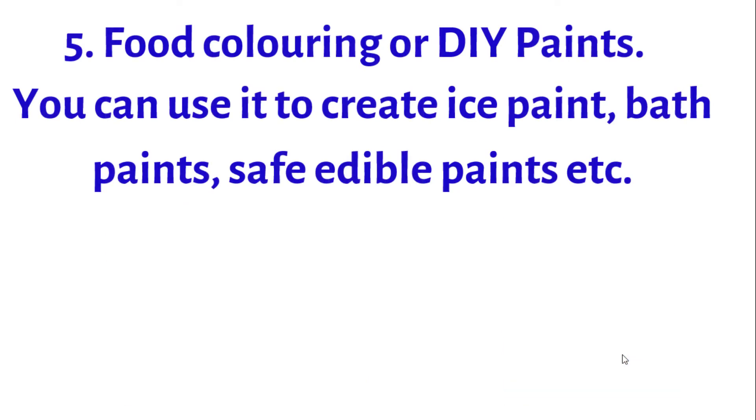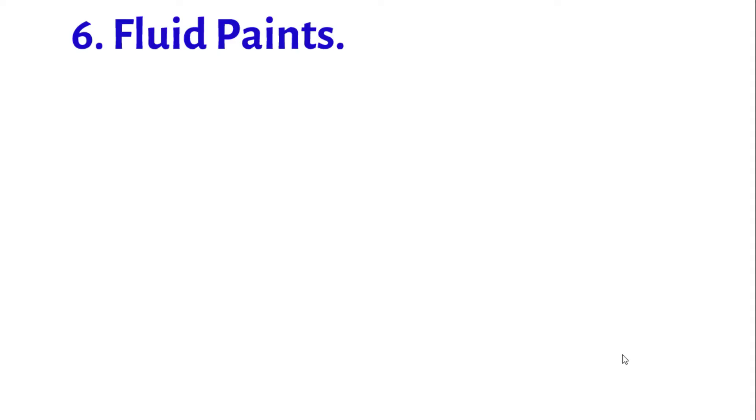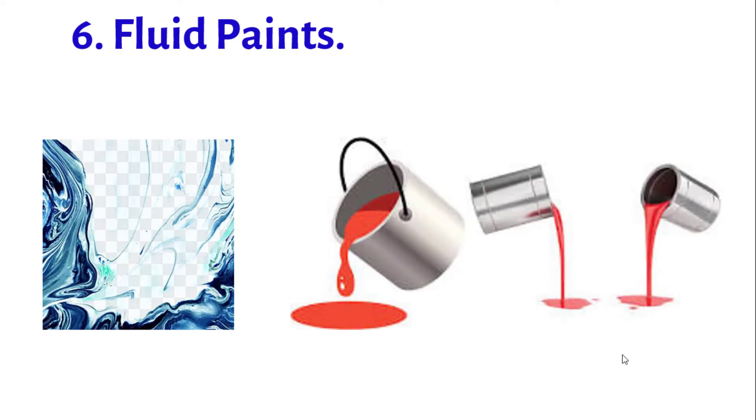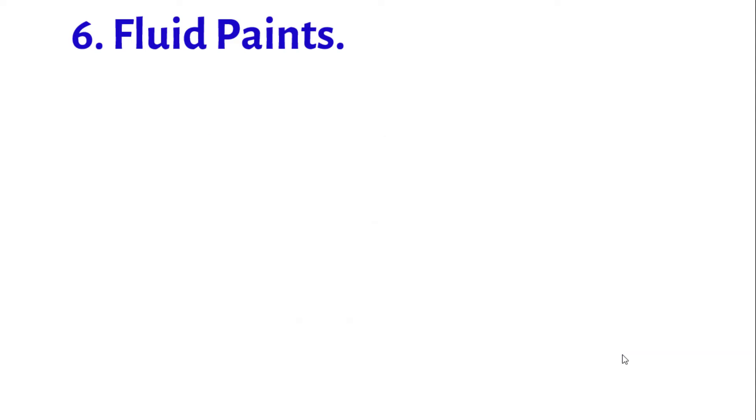Number 6: Fluid Paint. Use acrylic paints or washable paints mixed with a pouring medium to make fluid paints. Once mixed with a pouring medium, the paints become fluid and kids can tilt their canvases to make the paints flow in different designs.